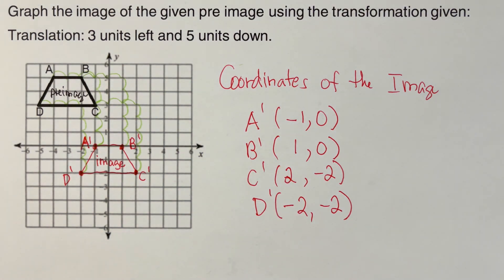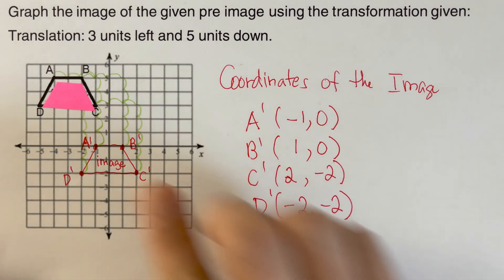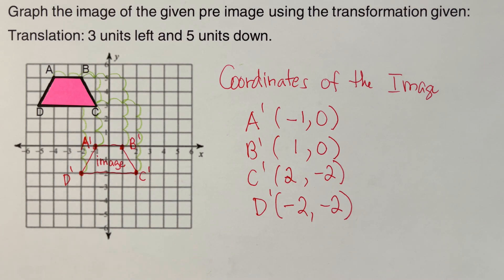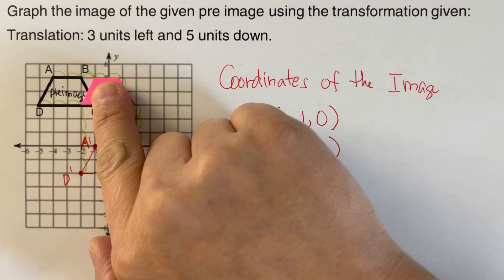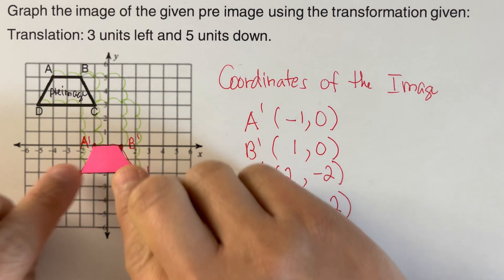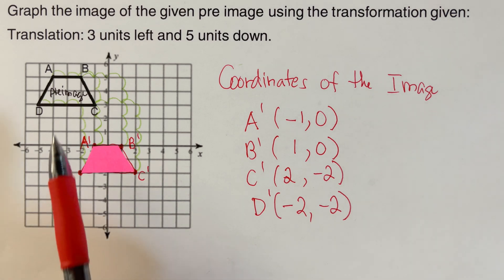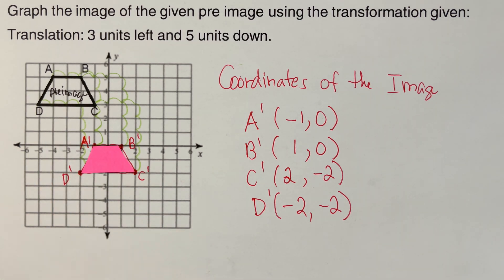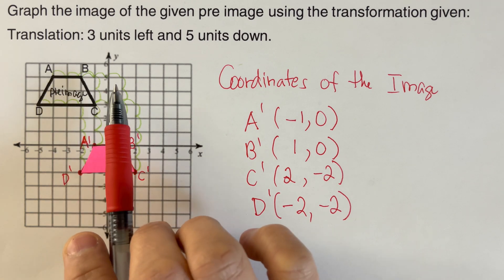So we can go ahead and test this to see if this image is correctly placed on the right spot when we translated three units left and five units down. So the pre-image right there — we are supposed to move it three units left and five units down: one, two, three, and five units down: one, two, three, four, five. So this time around it's sitting on its right spot. Just by looking at this, we can tell that the image and the pre-image have pretty much the same orientation, which means that we did not rotate it. We did not flip it around. It was just moved three units left and five units down.